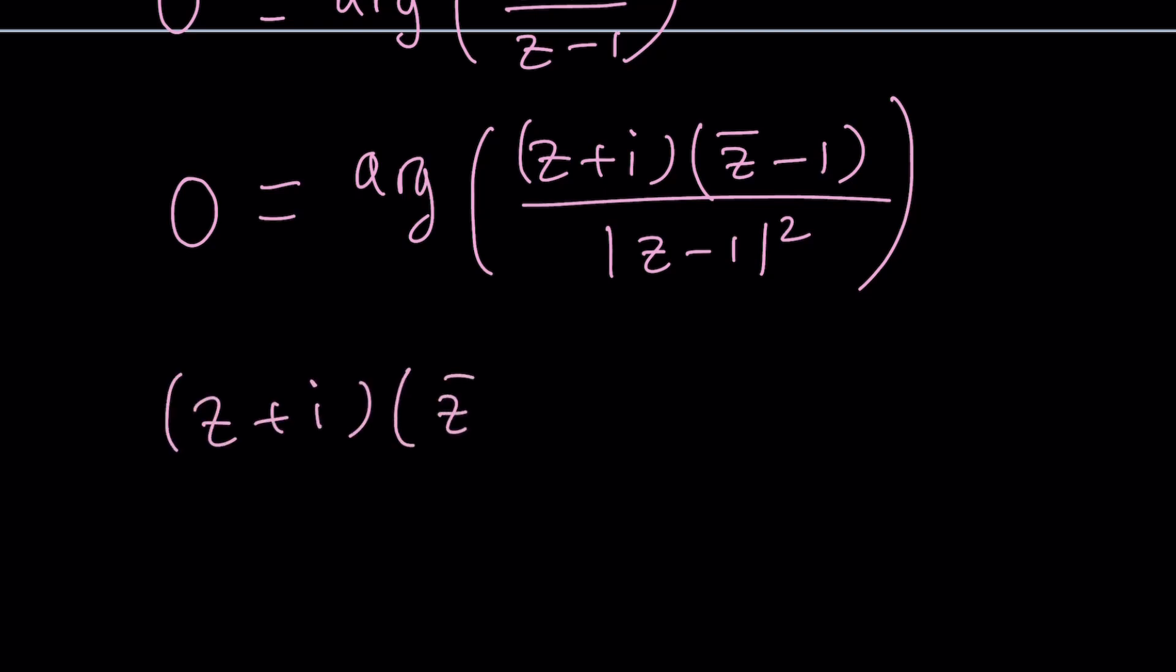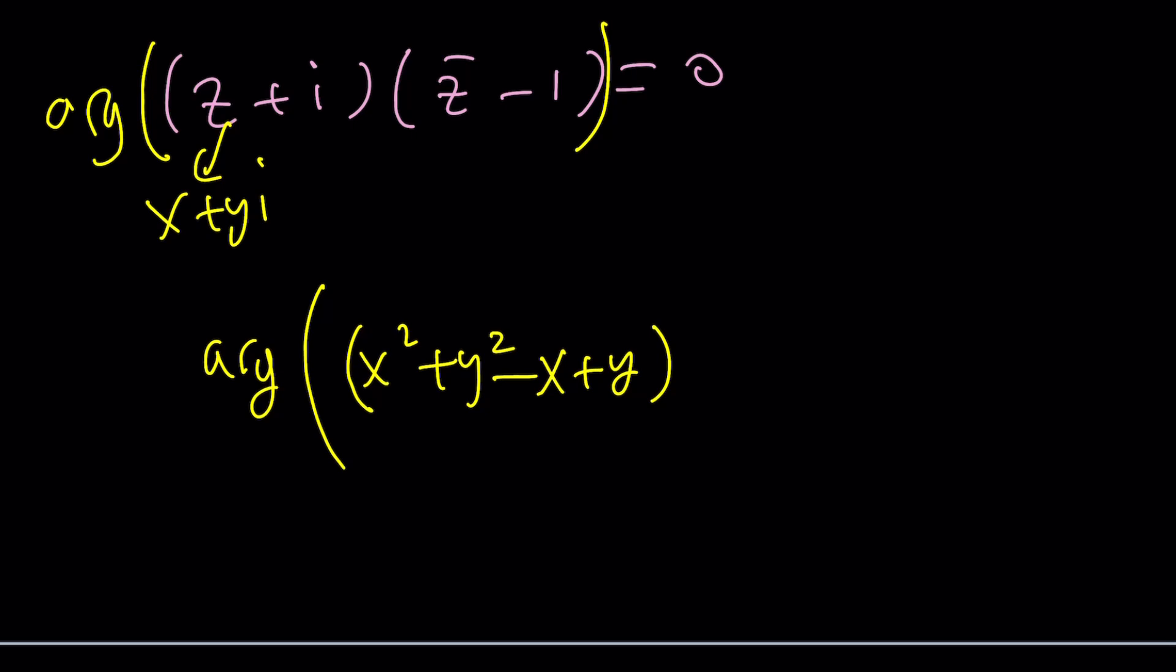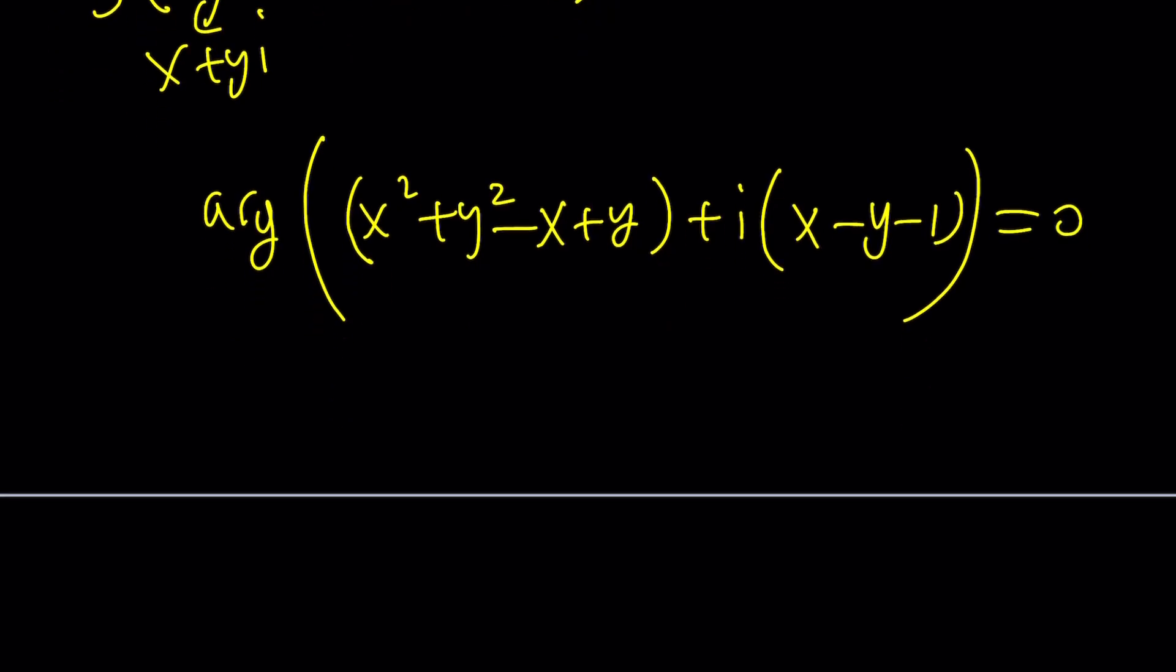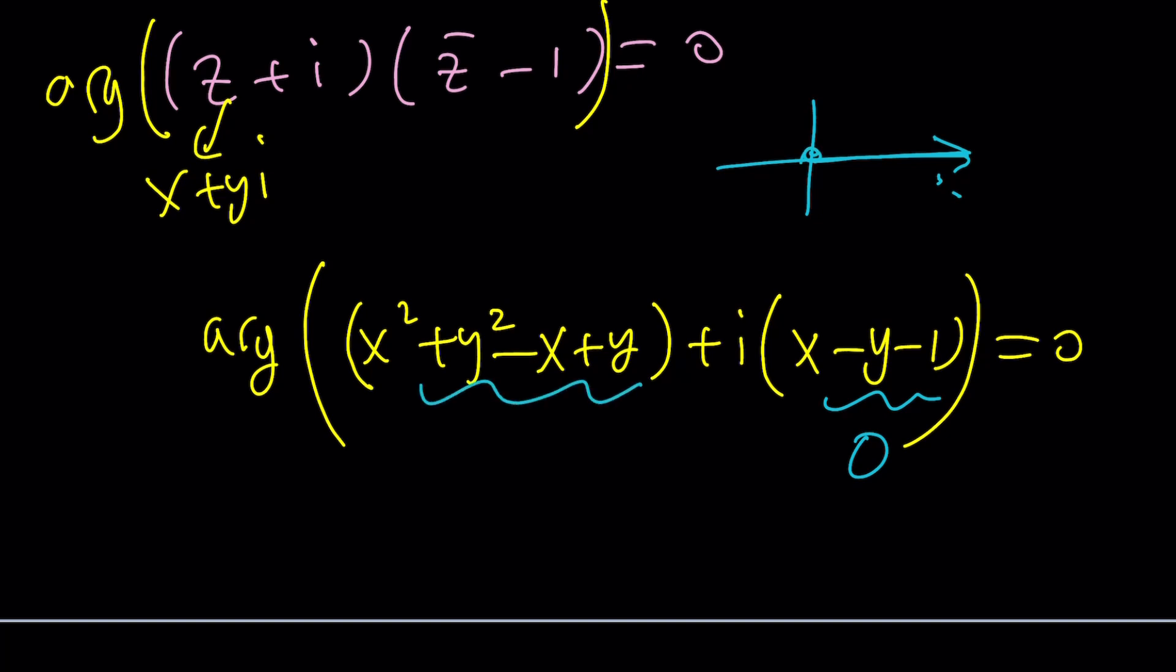So Z plus I times Z bar minus one is supposed to be zero, which means that two things, again, replacing Z with X plus YI, you're going to get the following. The argument, by the way, I forgot to write the argument. The argument is supposed to be zero, not the whole thing. So the argument of the following is going to be zero, X squared plus Y squared minus X plus Y, this is the Z plus I, the real part, plus I times X minus Y minus one, that should look familiar to you. And this equal to zero. Now two things need to happen for this to work. The imaginary part needs to be zero, because you're talking about the argument being zero. So you're going to be on the positive real axis, not on the negative one. And the real part, well, the imaginary part needs to be zero, because you need to be on the real axis. And the real part is supposed to be greater than zero, because you have to be on the positive side. Otherwise, the argument is going to be pi instead of zero. Make sense? Great.